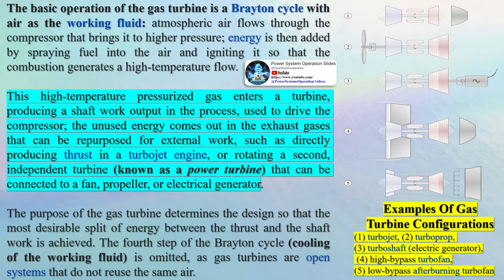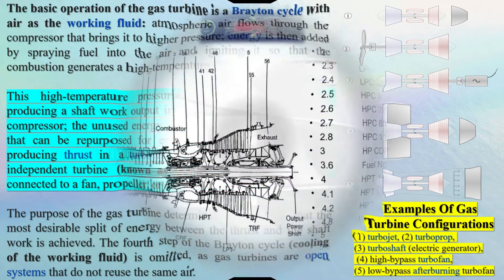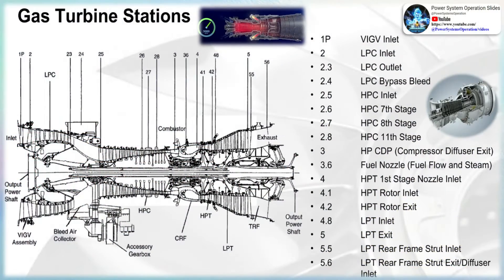This high-temperature pressurized gas enters a turbine, producing a shaft work output used to drive the compressor. The unused energy comes out in the exhaust gases that can be repurposed for external work, such as directly producing thrust in a turbojet engine, or rotating a second independent turbine known as a power turbine that can be connected to a fan, propeller, or electrical generator.